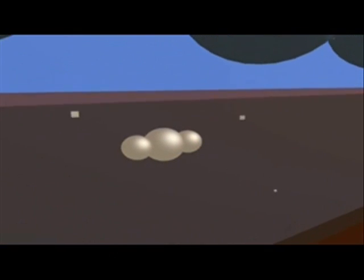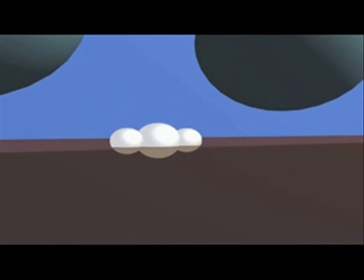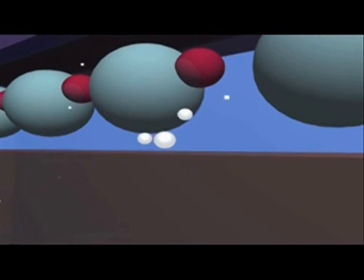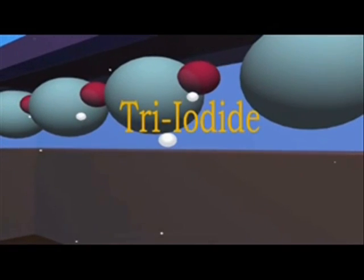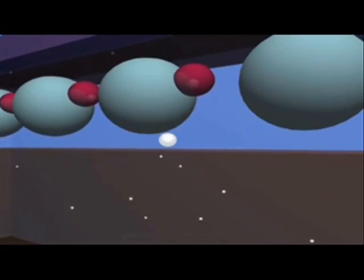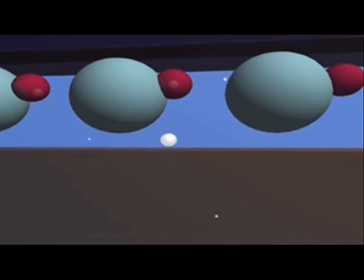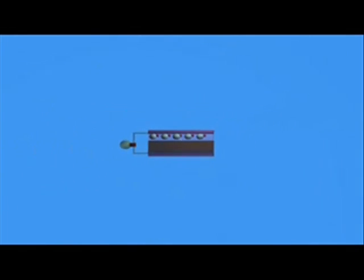The iodide ion makes its way towards the activated TiO2 and transfers an electron to the TiO2. The iodide ion reforms back to tri-iodide and the TiO2 molecule reverts back to its previous unactivated state. The dye is now ready for the next photon from the sun.